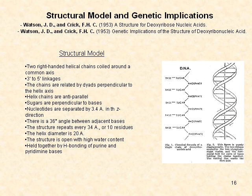The structural model presented by Watson and Crick can be visualized in the illustration to the right. The leftmost figure depicts a basic chemical diagram of a single DNA chain, with nucleotides linked 3-prime to 5-prime by sugar-phosphate bonds. The figure to the right shows two right-handed helical chains coiled around a common axis. The chains run antiparallel and are related by dyads perpendicular to the helix axis. Sugars are perpendicular to bases, nucleotides are separated by 3.4 angstroms in the z-direction, and there is a 36-degree angle between adjacent bases. The structure repeats every 34 angstroms or 10 residues, the helix has a diameter of 20 angstroms, and it is held together by hydrogen bonding of purine and pyrimidine bases.